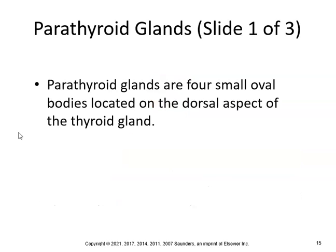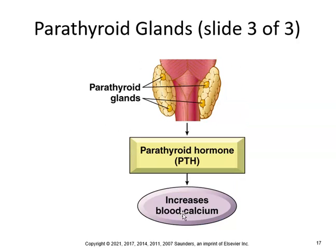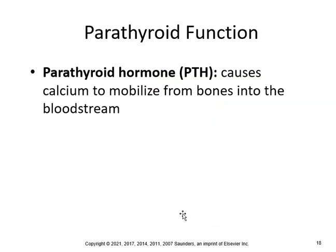Parathyroid glands are four small oval bodies located in the dorsal aspect — behind the thyroid gland. Here you can see the parathyroid glands, the thyroid gland, the epiglottis, the pharynx, esophagus, and trachea. Parathyroid glands produce parathyroid hormone, which increases blood calcium levels. Parathyroid hormone causes calcium to mobilize from bones into the bloodstream.